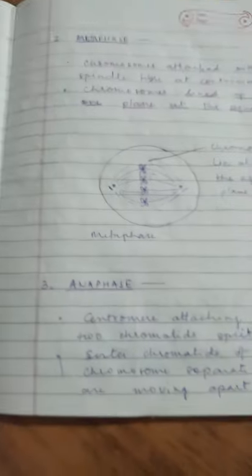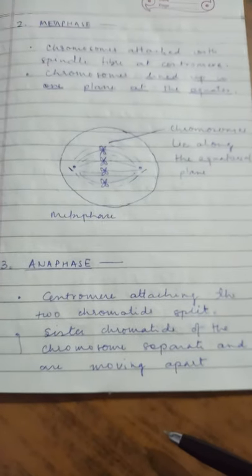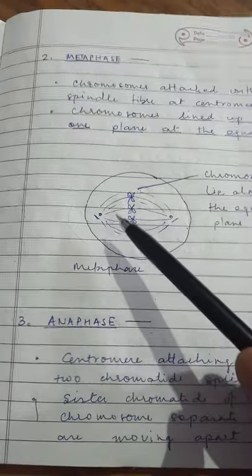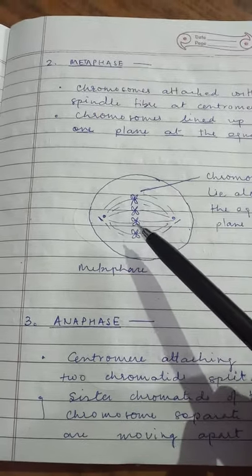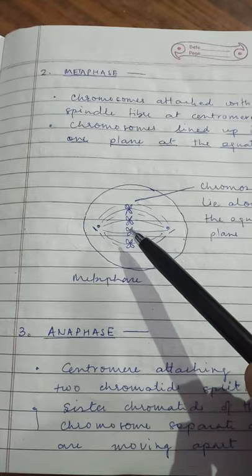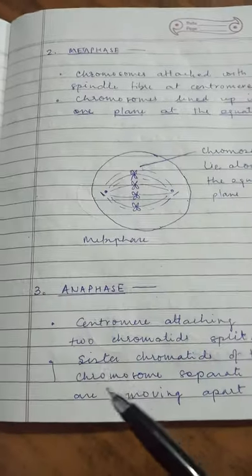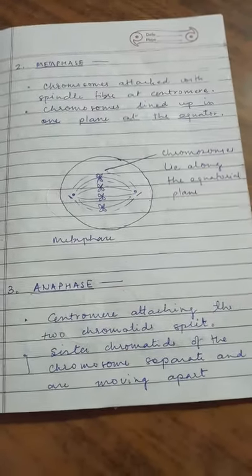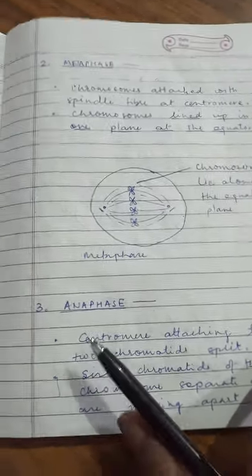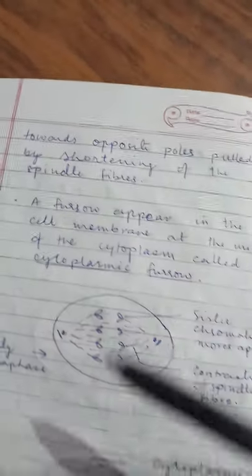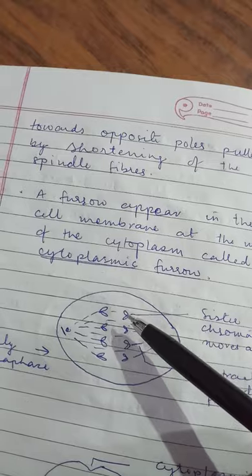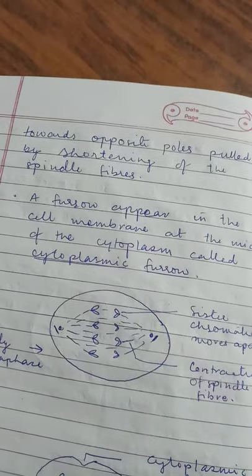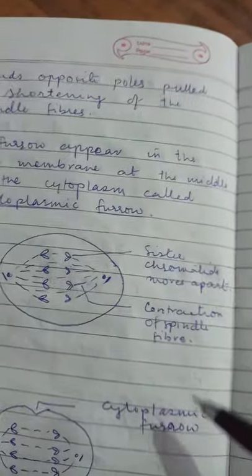Now we come to the third phase, that is anaphase. Here in anaphase, the centromere attaching the two sister chromatids splits. In metaphase, chromatids or sister chromosomes were attached at a point known as centromere. In anaphase, this centromere splits so that the sister chromatids of the chromosome separate and start moving apart towards the opposite poles. You can see this in the figure.